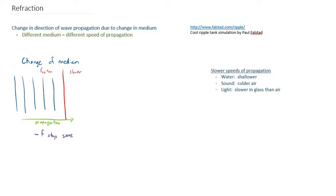Well, if the frequency stays the same, and we know the velocity is decreasing, so our velocity is decreasing, then we know from our basic formula that V equals F times lambda that our wavelength has to also decrease.